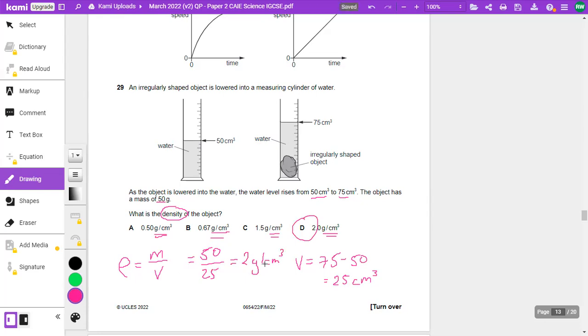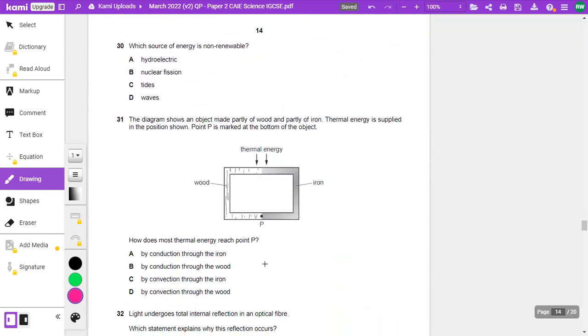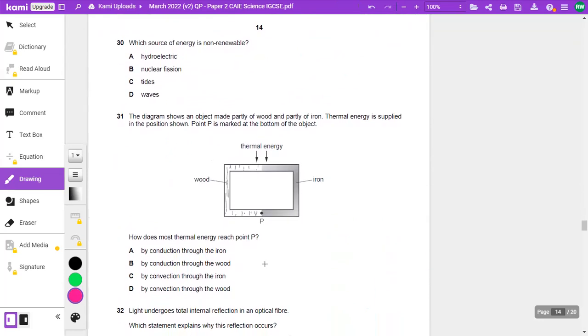So you see, you could have to do quite a bit to get that mark, but normally then that means that other questions are a little bit quicker. So for example, this one is a quick definition question. Which source of energy is non-renewable? Well, we know hydroelectric is renewable. Tides are renewable. Waves are renewable. So the answer has to be nuclear fission, and that's because uranium is limited, or the supply of uranium on Earth is limited, so we will eventually run out. We can't replace it, so it's non-renewable.